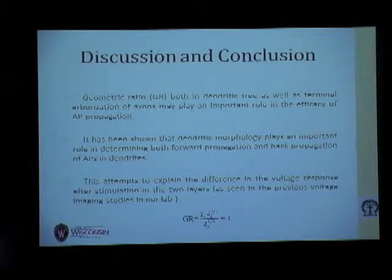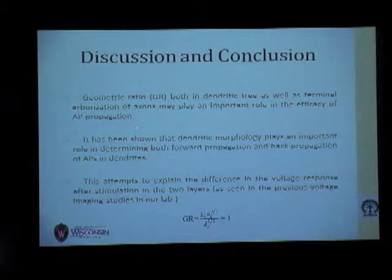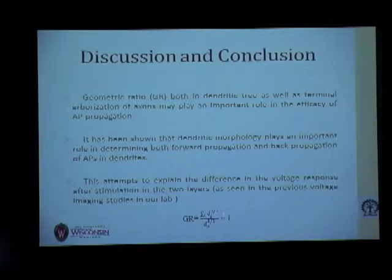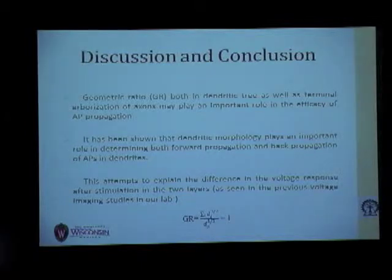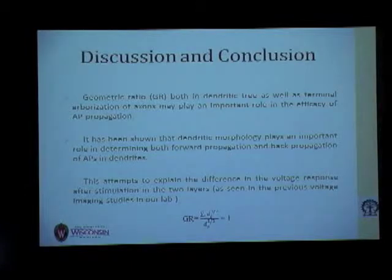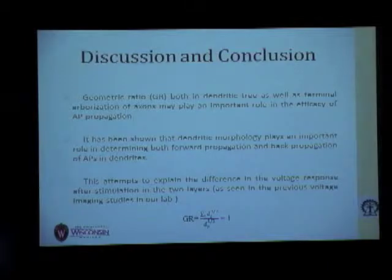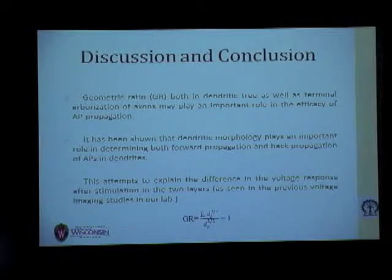How do I explain these results? Going through many lectures, I found that the geometric ratio — that is, the sum of the diameters of the daughter branches divided by the parent branch — should be equal to 1. This geometric ratio plays a very important role in the propagation of action potentials, and it is important not only for the dendritic tree but also for the axons.